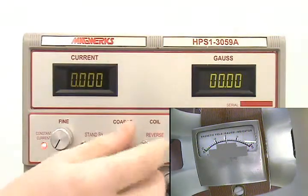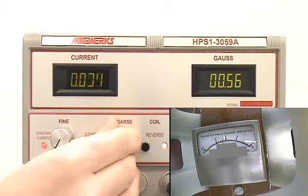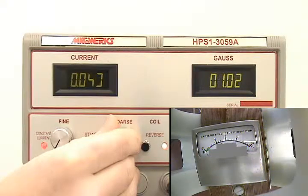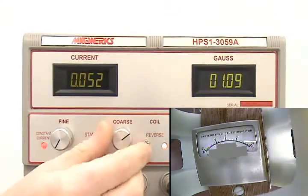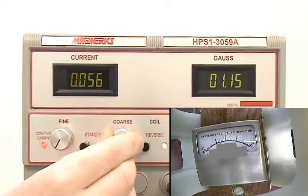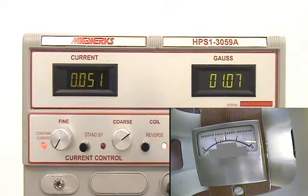Reversing polarity, we check if we have linearity. At 1.06 Gauss in the coil, the magnetometer reads almost 6 Gauss.